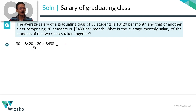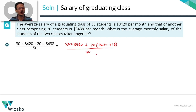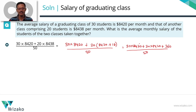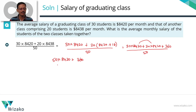This is the calculation we have to do. I'm going to break these numbers and write it differently. 30 × 8420, plus 20 × 8438 — I'm planning to split 8438 as 8420 + 18. Expanding the right-hand term in the numerator, this becomes 20 × 8420 plus 20 × 18. So the full numerator is 30 × 8420 + 20 × 8420 + 20 × 18, where 20 × 18 = 360. The sum of 30 × 8420 + 20 × 8420 equals 50 × 8420, giving us (50 × 8420 + 360) ÷ 50.